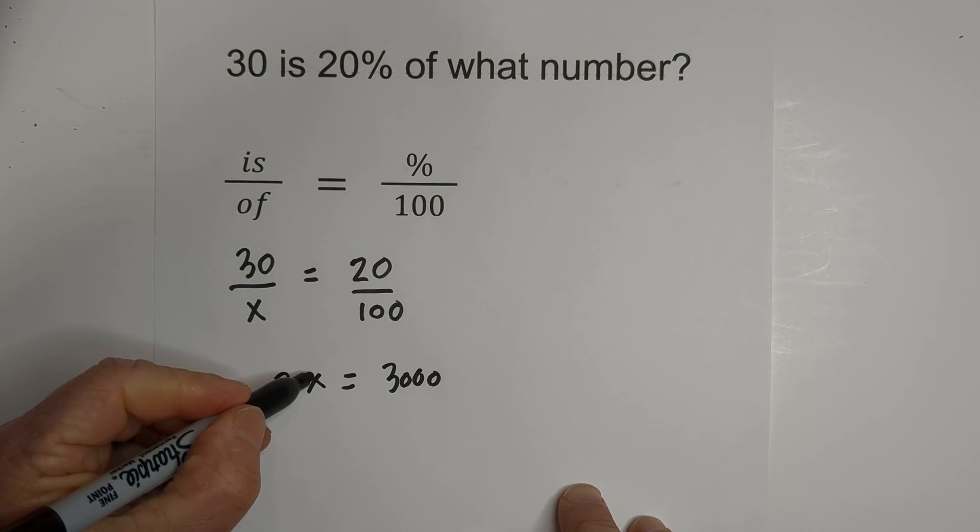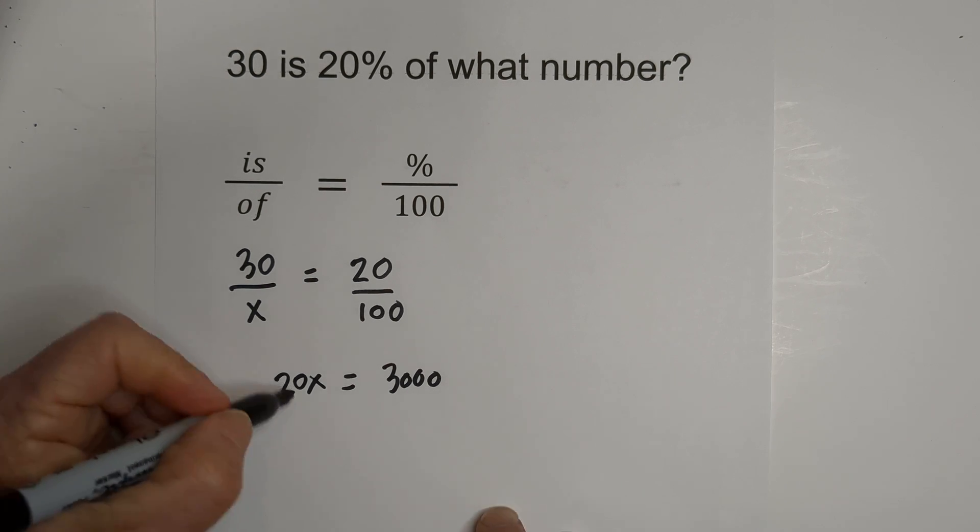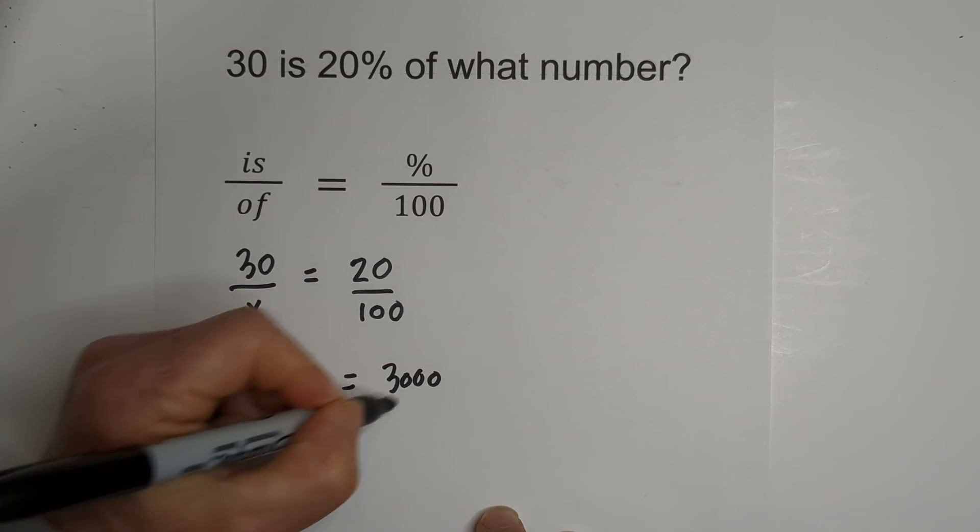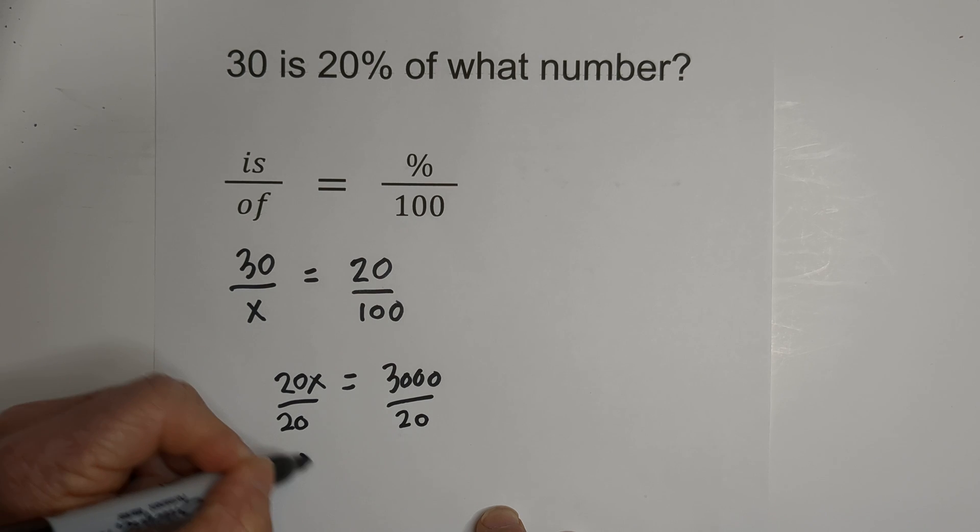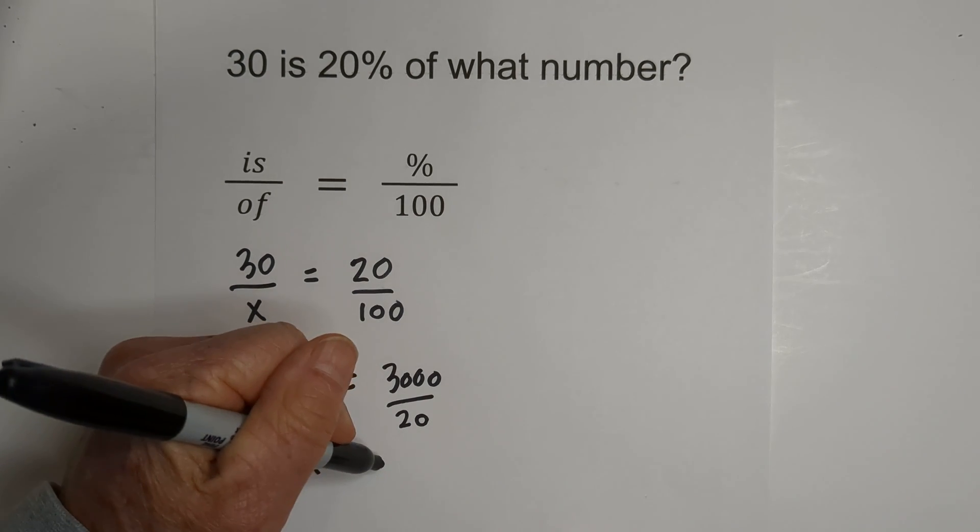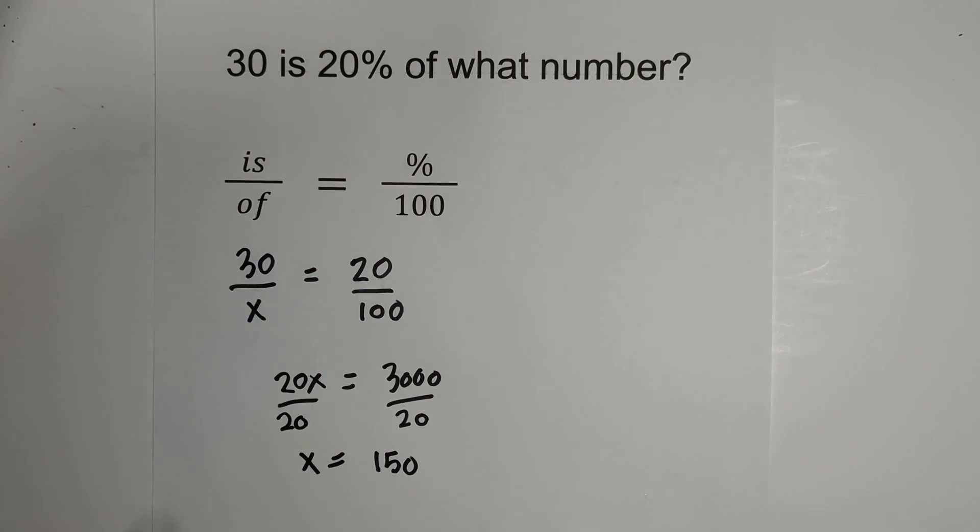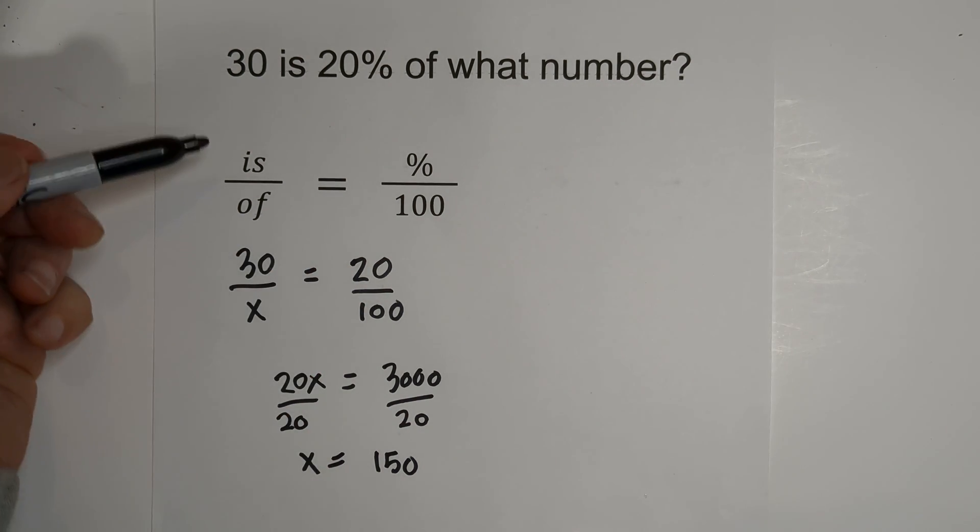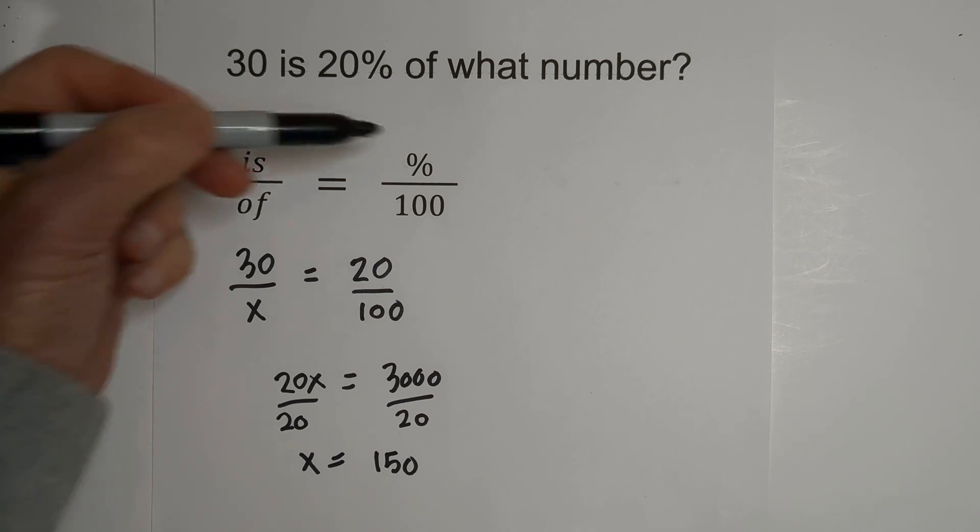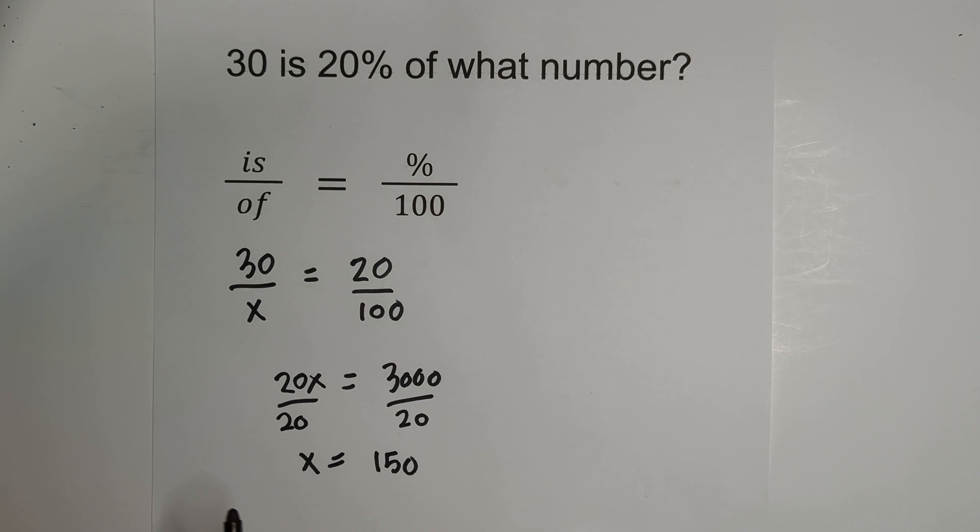Now when you divide through by 20, x equals 150 because 3000 divided by 20 is 150. Again we just plugged it into the is over of equals percent over 100.